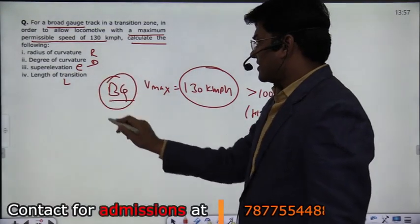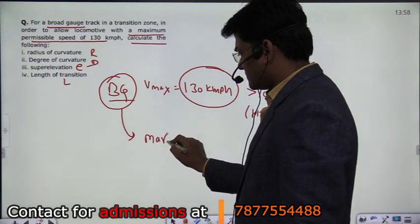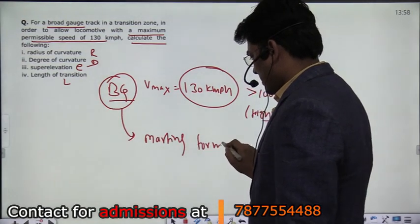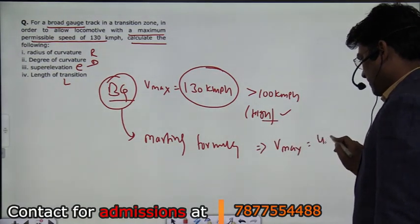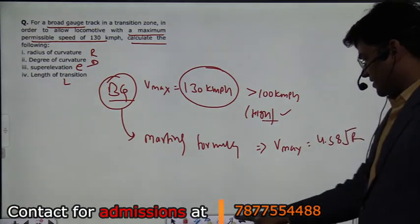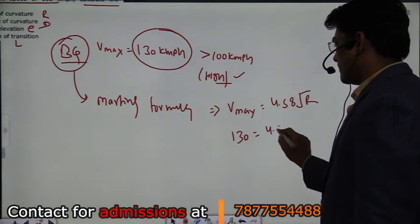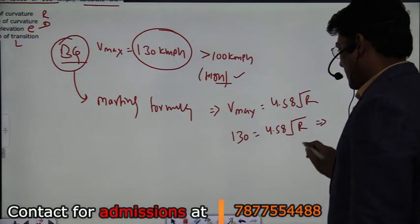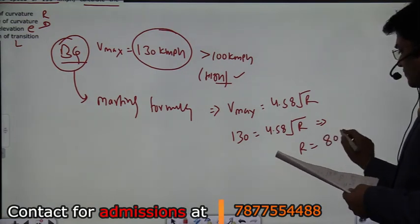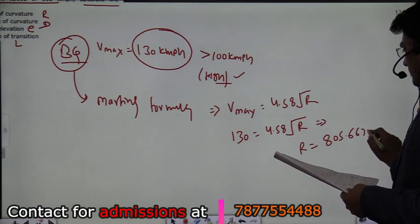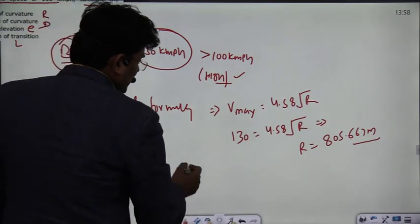First of all, if we talk about a busy track and a high speed track, then Martin's formula for safe speed will apply. Martin's formula is given by Vmax = 4.58 × √R, where Vmax is in km per hour and R is in meters. Substituting 130 km per hour, you get R = 805.667 meters. So the value of R is 805.667 meters — the first task is complete.